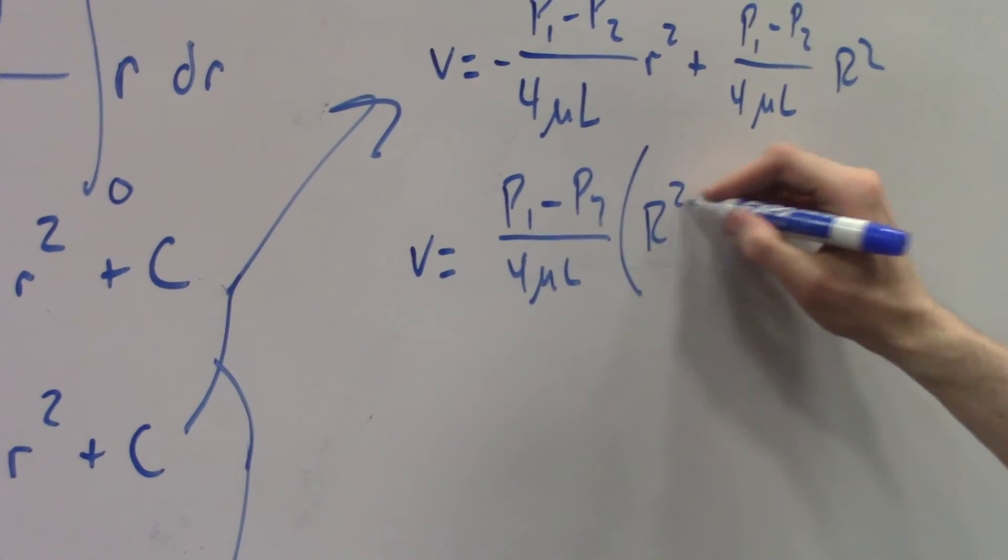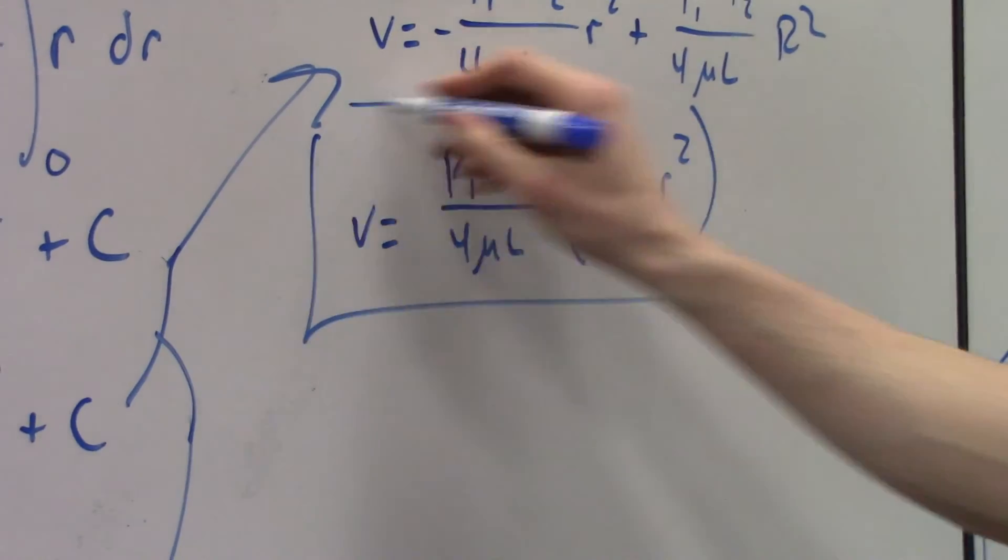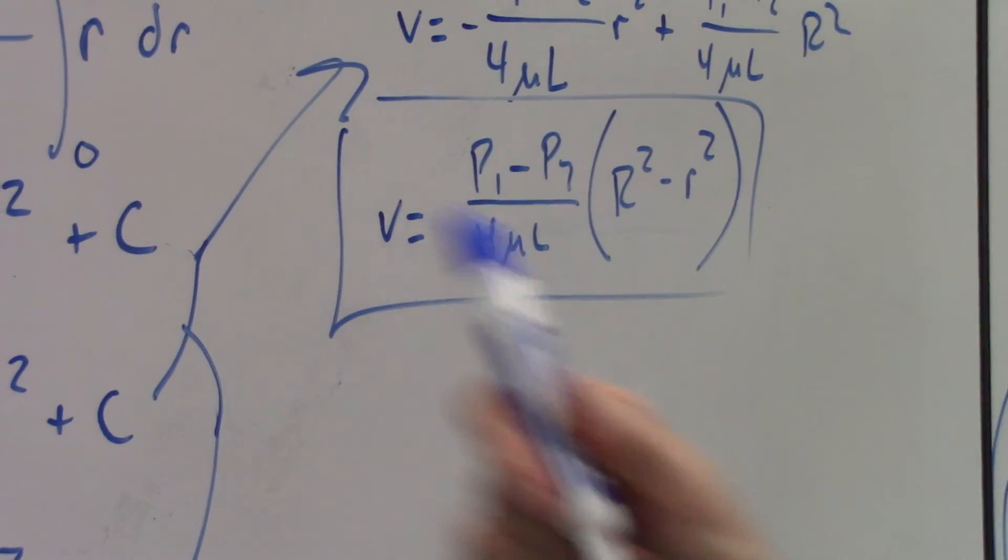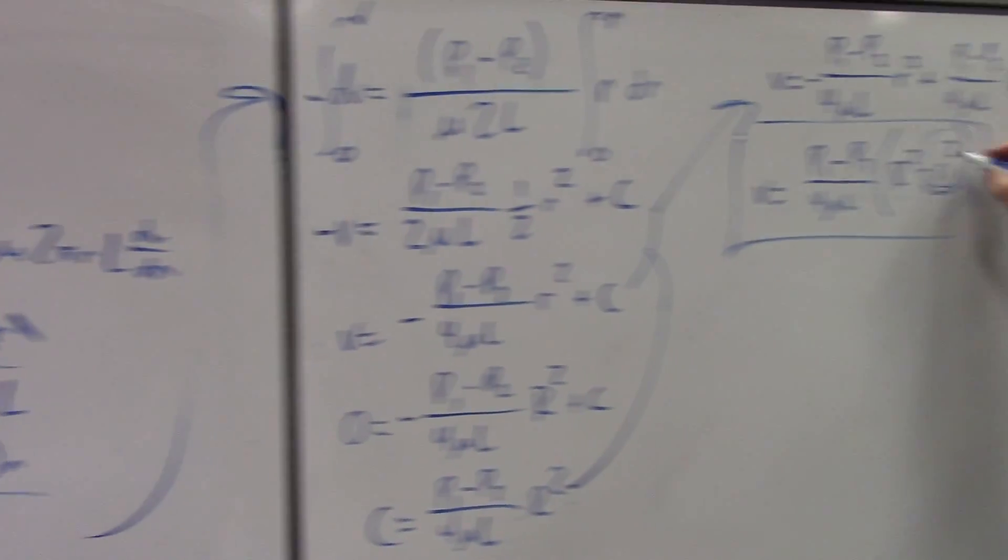Now this is the velocity profile, and we know it's a parabola because our variable is squared.